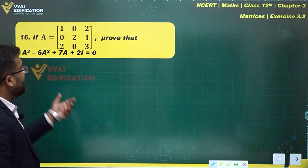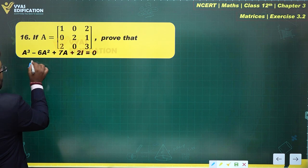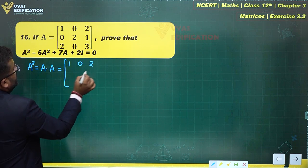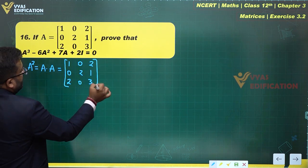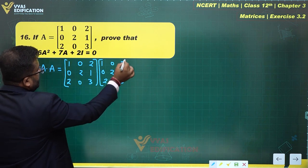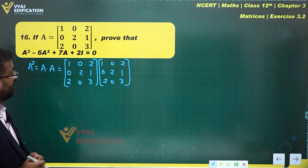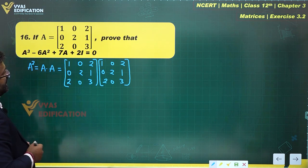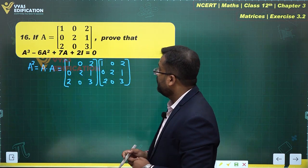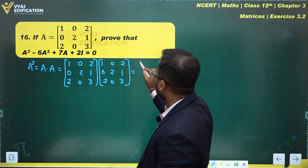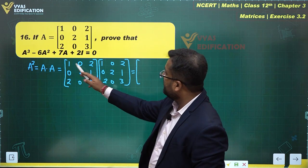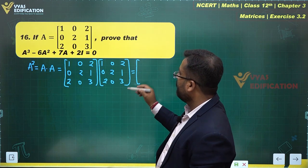We have the matrix A in front of us. A² is simply equal to A times A. The matrix A is: 1 0 2 / 0 2 1 / 2 0 3. Let's multiply these two matrices together. The first row times first column: 1×1 + 0×0 + 2×2 = 1 + 4 = 5.